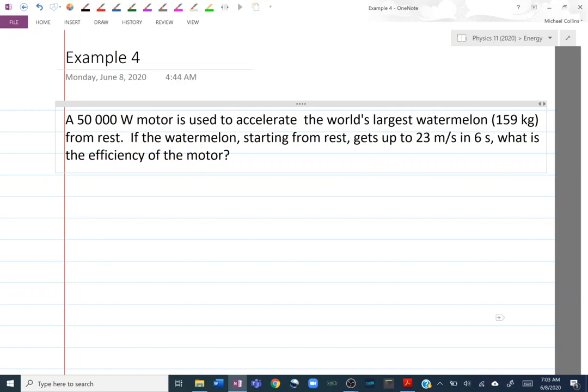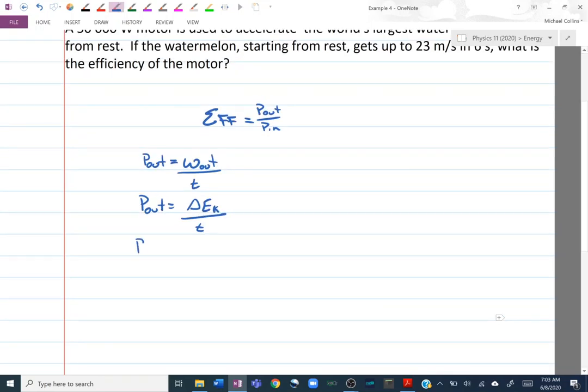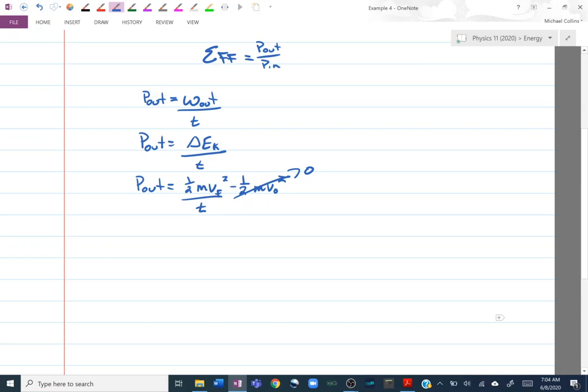So since it gave us a power in the question, it's the only time we're going to do it. If they give us a power in the question, then we're going to use the power out over power in form of the equation. If they don't mention power, don't think about power. So power out, and I might do these as separate equations. My power out is going to be my work out over time. And I say, what do I get out of this? Well, I get a watermelon moving really fast. It's moving really fast. We changed its kinetic energy in an amount of time. My power out is then going to be a half mv final squared minus a half mv naught squared. Initial velocity is zero. So that term just goes away, which is nice. I forgot about it divided by t. And now I have a reasonable expression to calculate my power out, which I'm going to substitute back into my original equation.